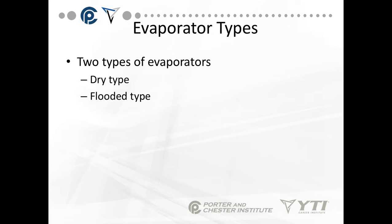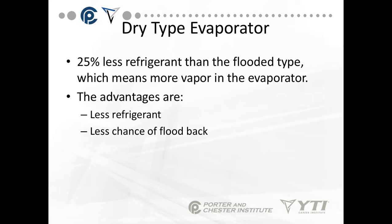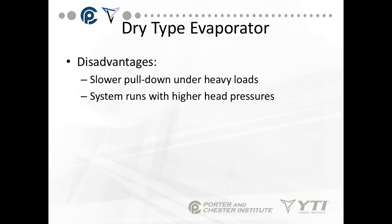We have two types of evaporators: dry type and flooded type. The dry type evaporator has 25% less refrigerant than the flooded type, meaning there's more vapor in that evaporator. The advantages of the dry type are less refrigerant and less chance of flood back to the compressor, since compressors can't handle liquid refrigerant. The disadvantages are a slower pull-down under heavy loads and slightly higher operating pressures.